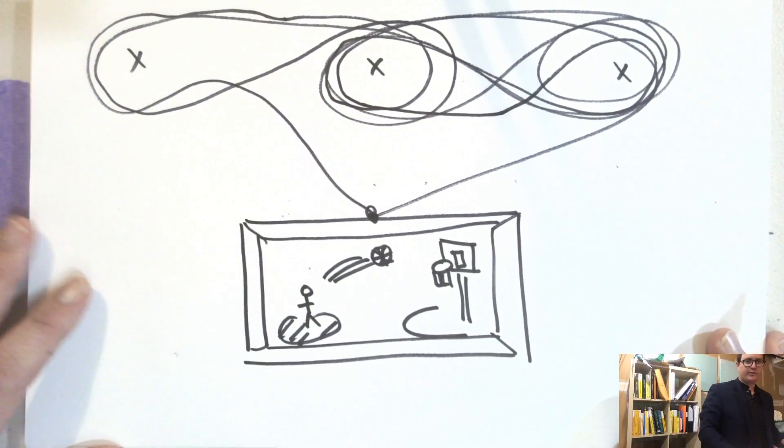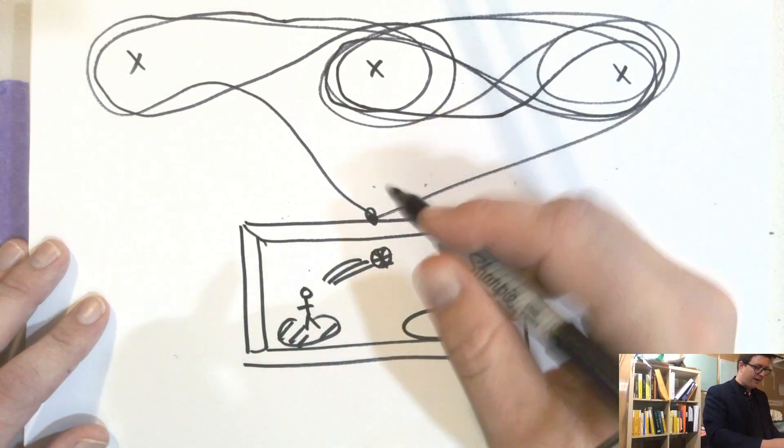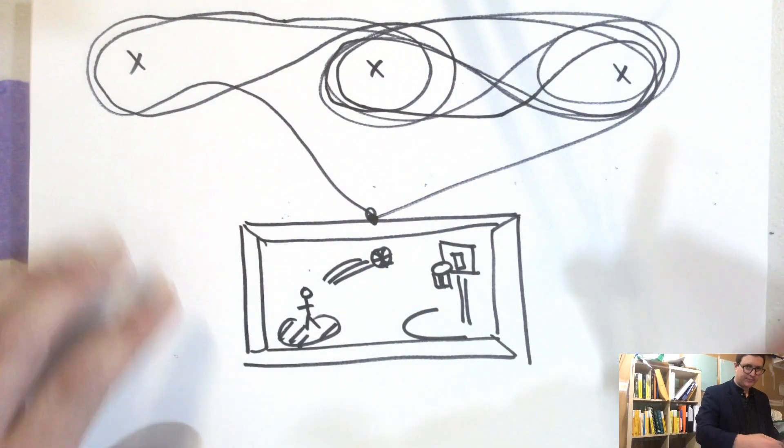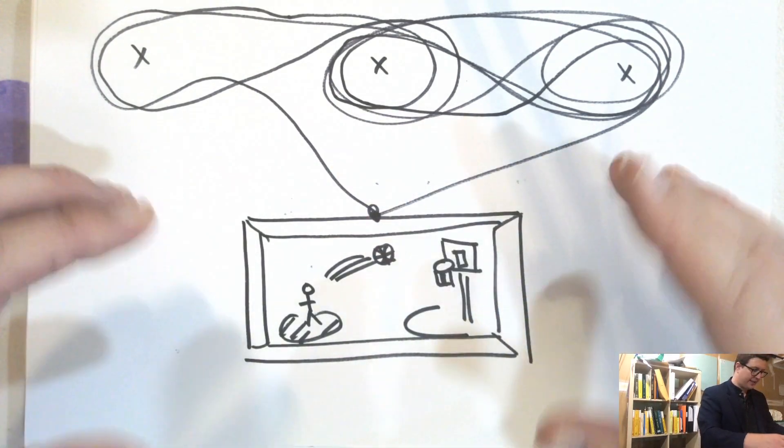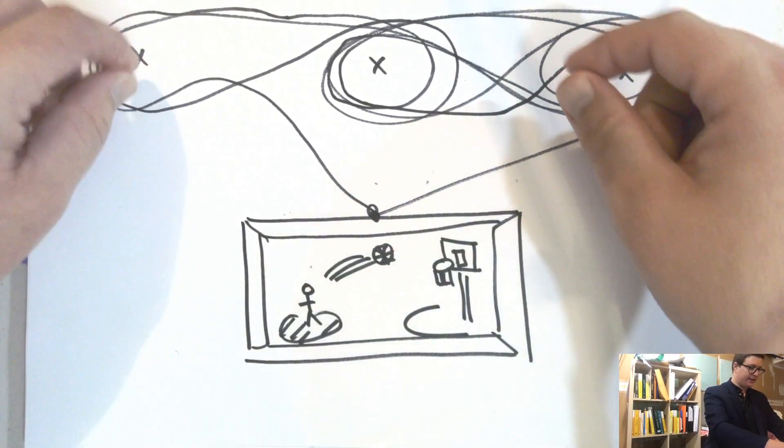And what I want the picture to do is I want it to have the property that, so first it's got to hang. So that if I put weight, if I let this thing hang, it's going to stay. It's not going to collapse.